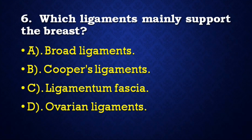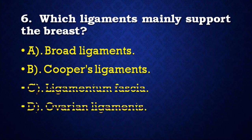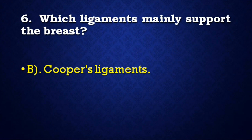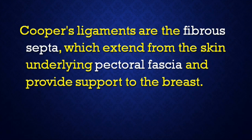Next question: Which ligaments mainly support the breast — broad ligaments, Cooper's ligaments, ligamentum fascia, or ovarian ligaments? Correct answer is Cooper's ligaments. The Cooper's ligaments are the fibrous septa which extend from the skin to the underlying pectoral fascia and provide support to the breast.